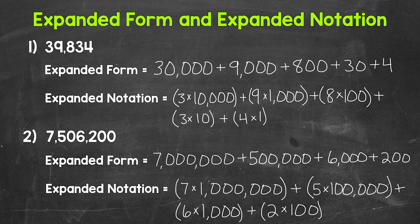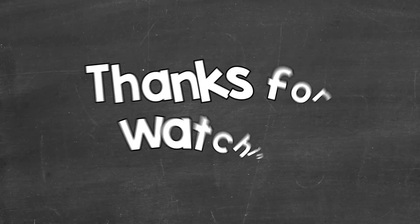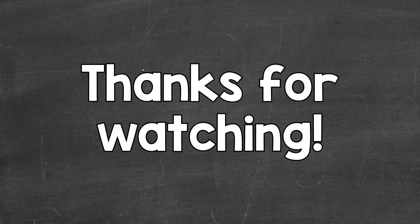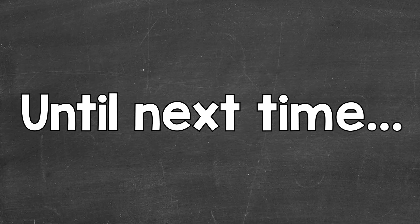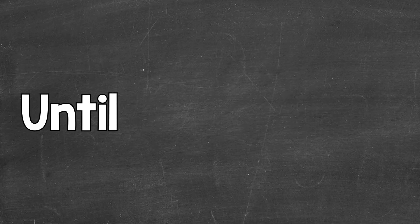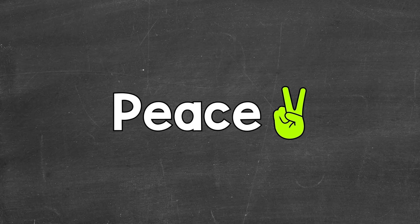For expanded notation, we should have 7 times 1,000,000 plus 5 times 100,000 plus 6 times 1,000 plus 2 times 100. So there you have it — there's how to write numbers in expanded form and expanded notation. I hope that helped. Thanks so much for watching. Until next time, peace.